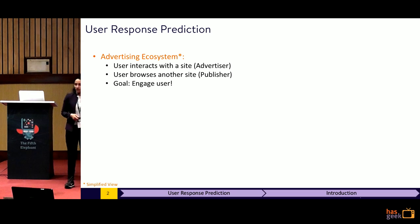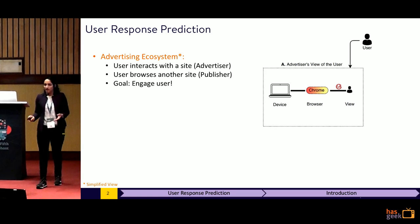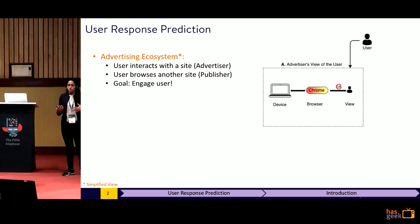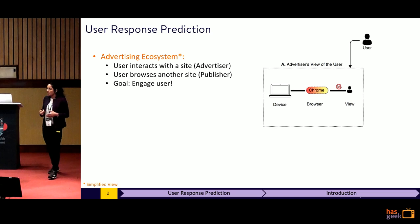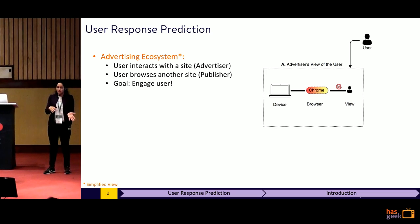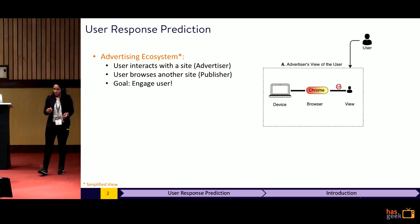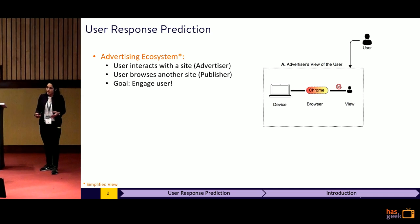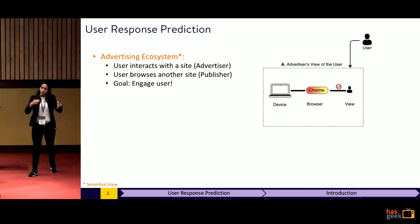So first off, what does an advertising ecosystem look like? There is a user who will visit an advertiser's site, say Walmart.com, and do different kinds of activities on our site. The user could look at item pages, some category pages, maybe add a few items to cart. And then usually the users will eventually go away and start browsing other websites on the internet. At this point, as advertisers, we want to re-engage the user and get them back onto our site.